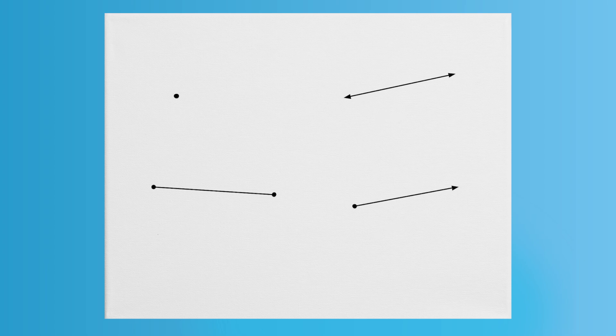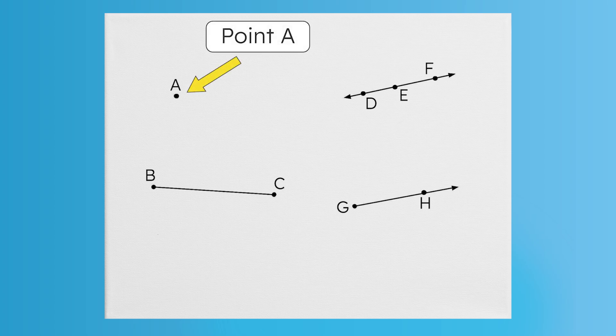Most of the time, we need to be specific when talking about points and lines. Instead of saying 'that line over there,' we label them with capital letters, so we know exactly which one we're identifying. First, we identify a point, line, line segment, or ray by checking out its features. Does it have arrows, endpoints, or just a single dot? Once we identify what it is, we can label it to give it a specific name. To name a point, we call it by its letter name, like point A.